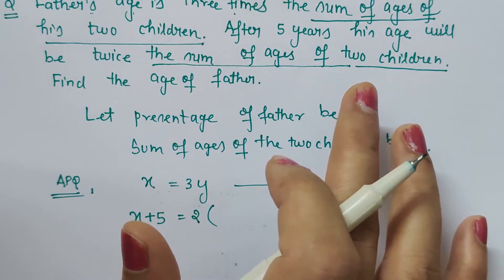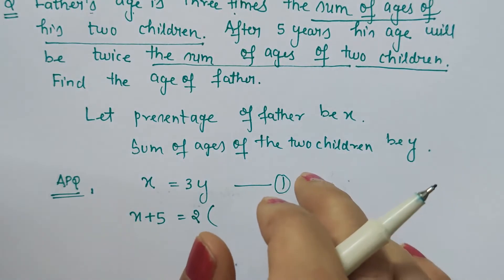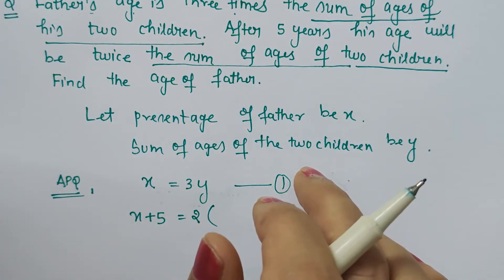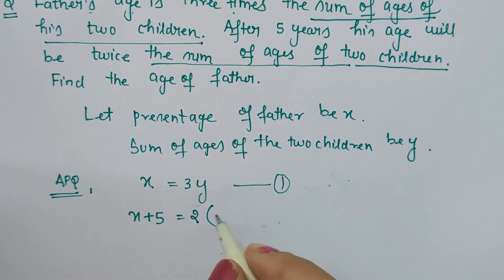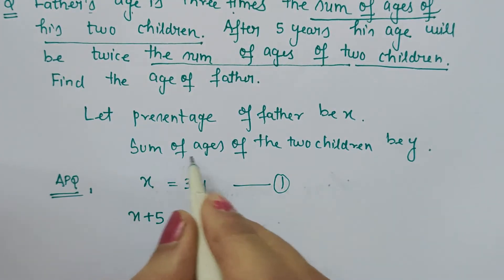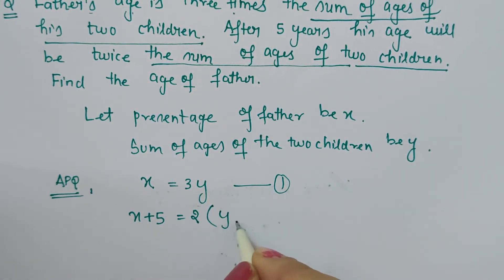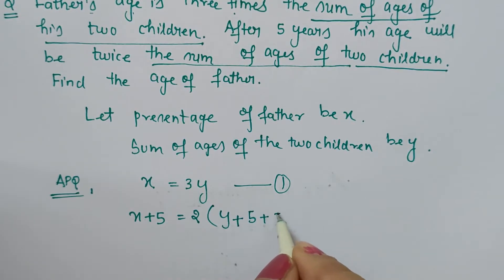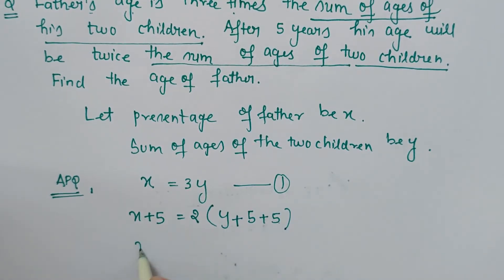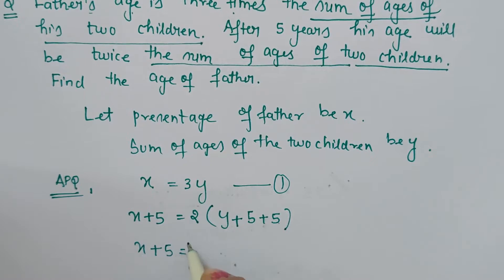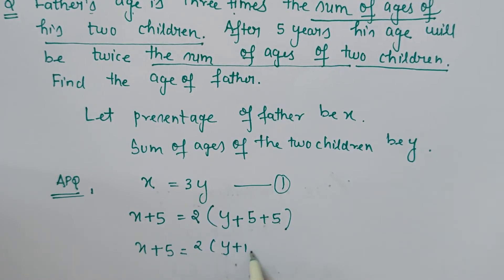How many children are there? There are two children, so plus five for the first child and plus five for the second child, because there will be an increase of five years for both children. We have assumed sum of ages of the two children as y, but for each individual child there will be plus five and plus five. This gives us the second equation: x + 5 = 2(y + 5 + 5), so 2(y + 10).